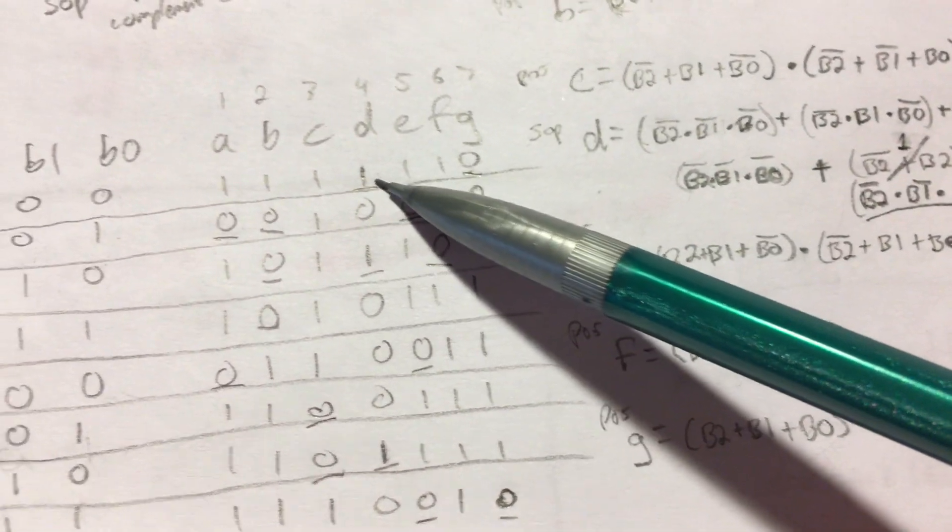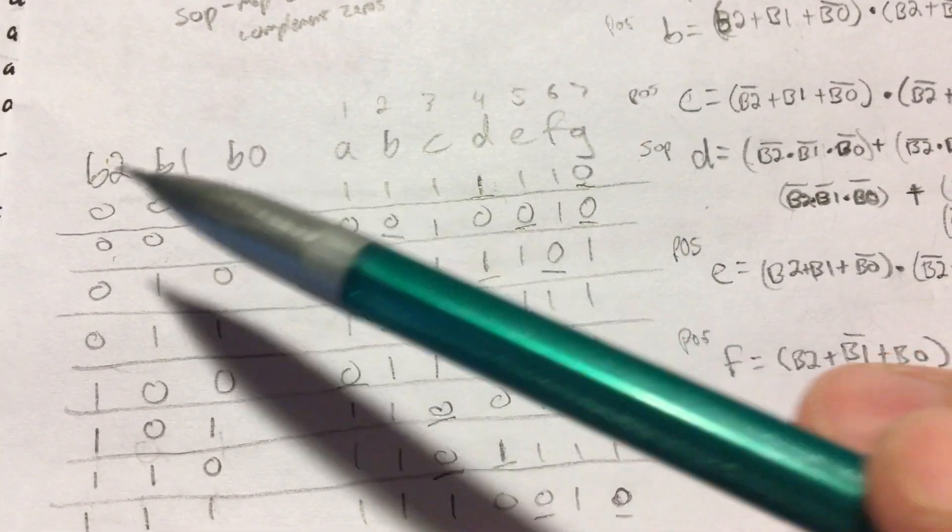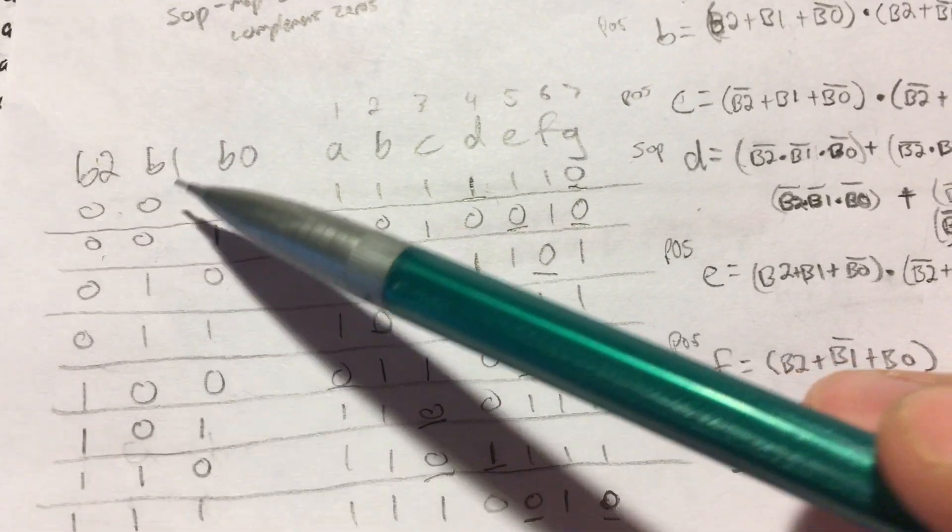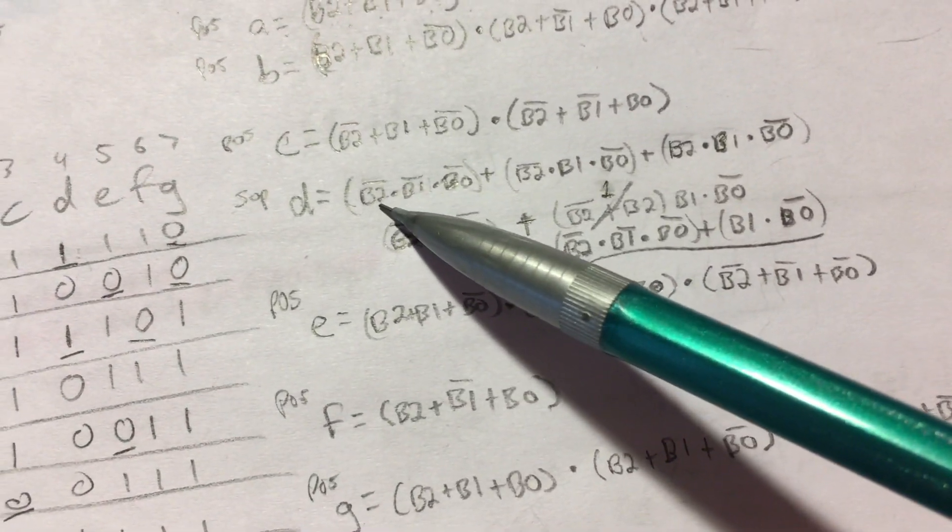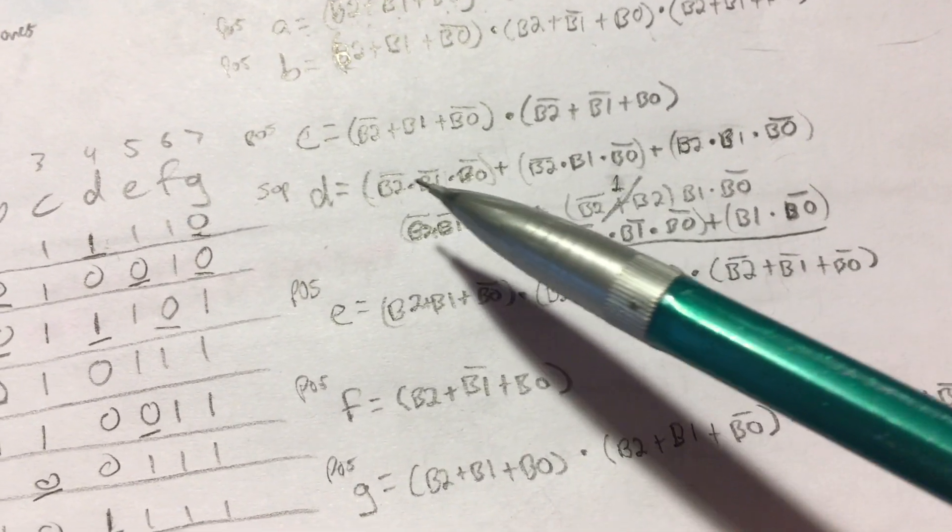For example, D, the first one is 0, 0, 0, so inverted B2, inverted B1, and inverted B0. And here we see B2 complement, B1 complement, B0 complement.